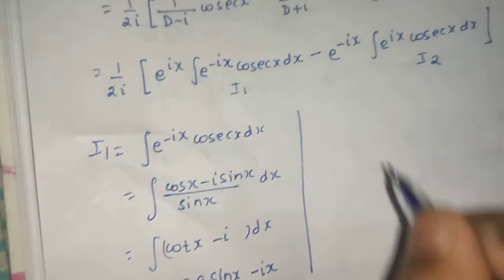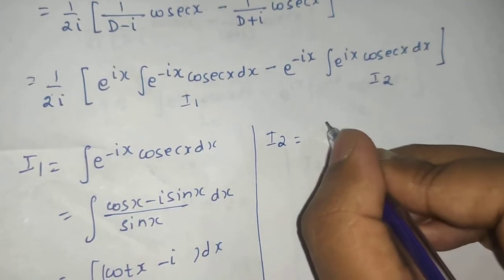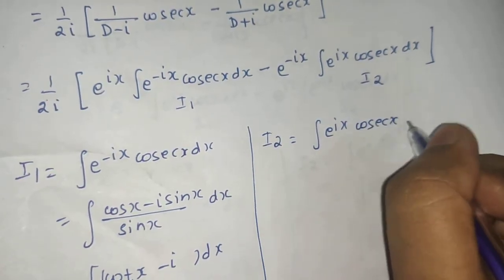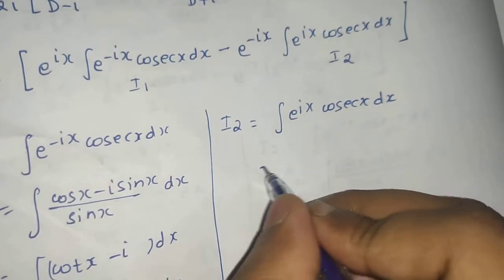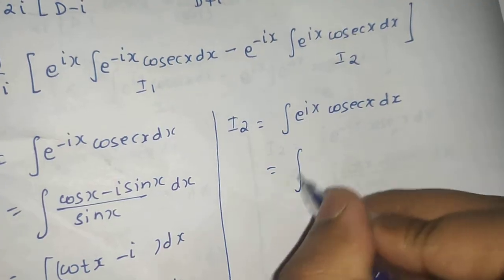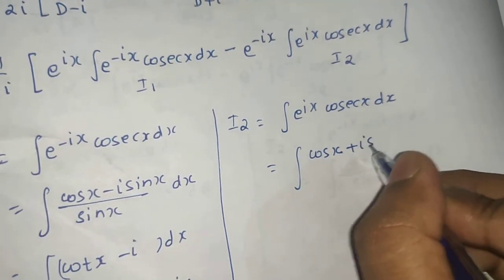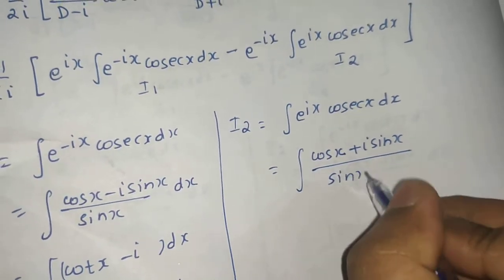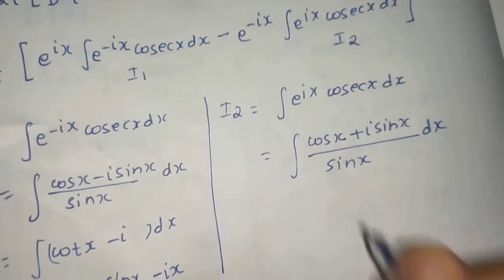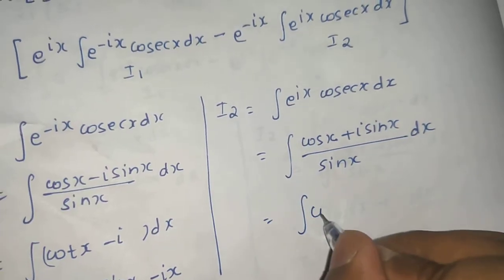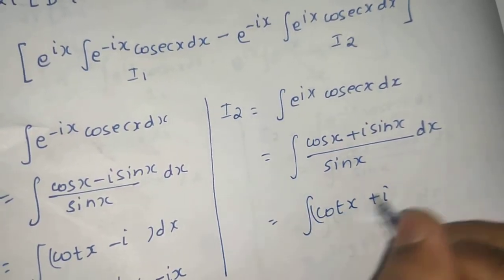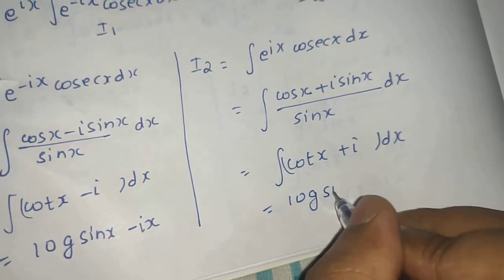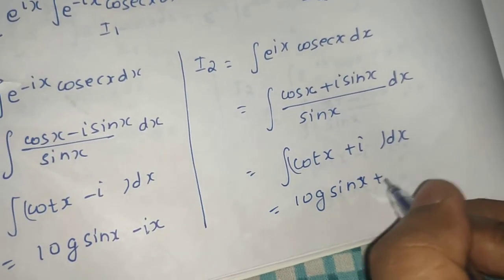Similarly, I₂ = ∫e^(ix) cosec x dx. Writing e^(ix) = cos x + i sin x divided by sin x gives the integrand as cot x + i. Integrating, I₂ = log(sin x) + ix.